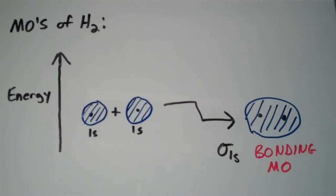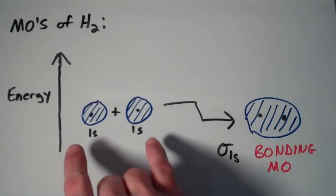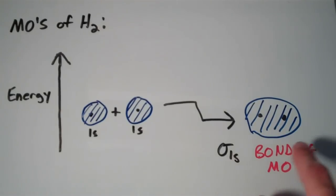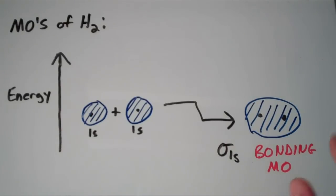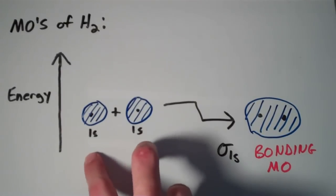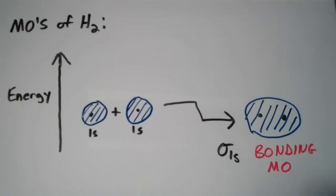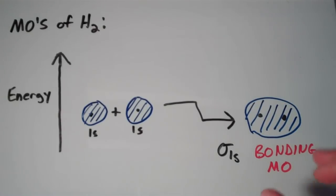The reason why it's called a bonding molecular orbital is because it is lower in energy than the two atomic orbitals from which it is formed. So that means that by combining to form the sigma 1s orbital, the electrons are now in a state of lower energy than they were for the individual hydrogen atoms. Chemical systems like to proceed towards the lowest energy, so electrons tend to populate the lowest energy state available.